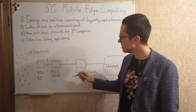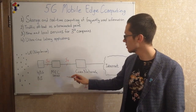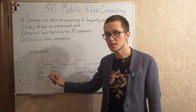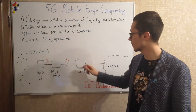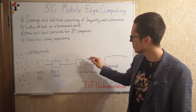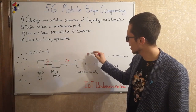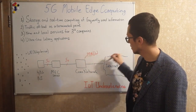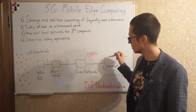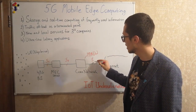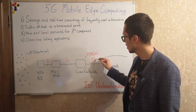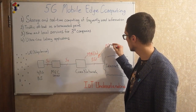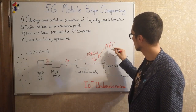At the same time, you can locate a MEC server not only as part of the radio access network but also as part of the core network — for example, between the PDN gateway and another network, sitting on the SGI interface right here.